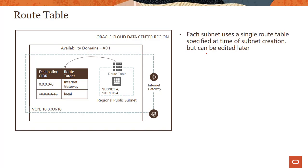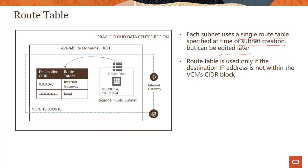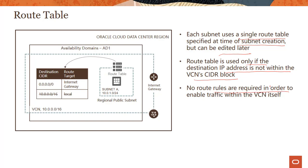Important considerations to keep in mind: each subnet uses a single route table — each subnet can only have a single route table. You can specify that when creating the subnet or edit it later if you're not sure which route table to use. Route tables are used only if the destination IP address is not within the VCN CIDR block, meaning you don't require any route rules to enable traffic within the VCN itself. As shown in this graphic, no local rule is required for routing traffic within the VCN — it's done implicitly.